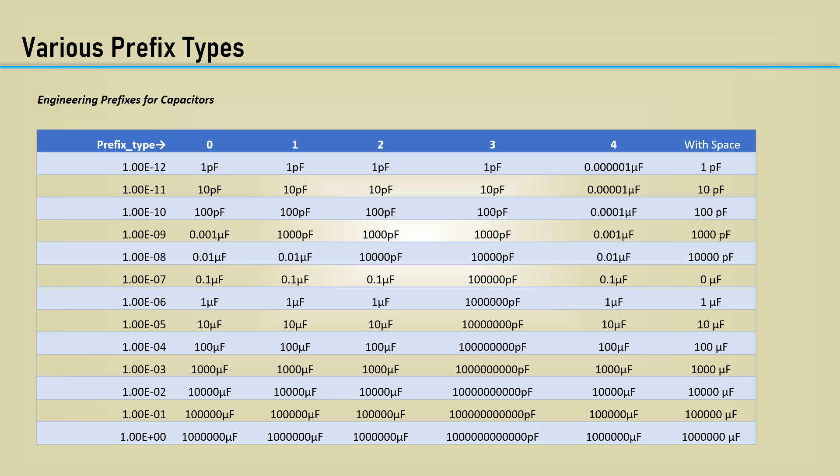Here is a table of the various text returned from our function for various capacitance values on the left. Notice where the prefixes transition from pico to micro. Now let's go to Excel and put it to use.